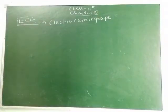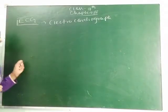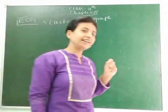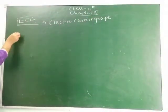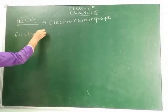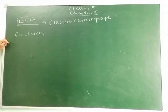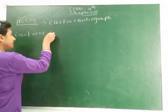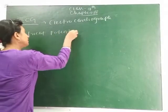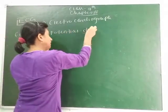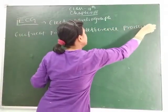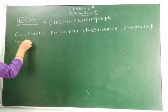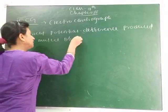ECG, or electrocardiogram, records the electrical potential difference. This is the electrical potential difference created in the cardiac muscles of the heart.